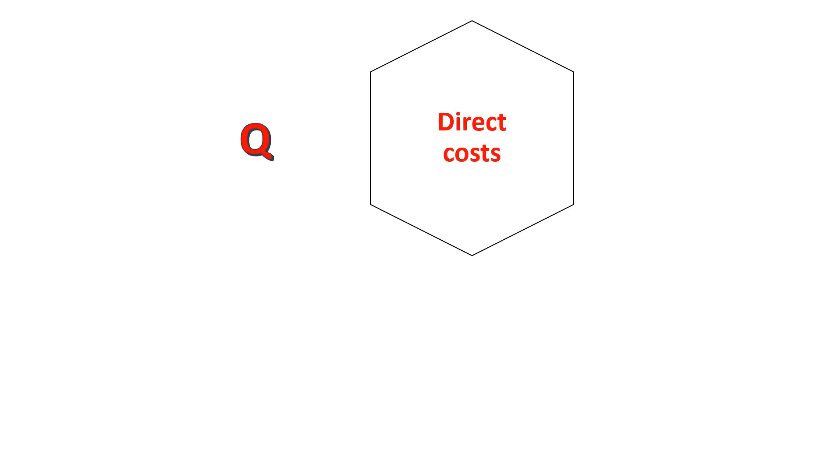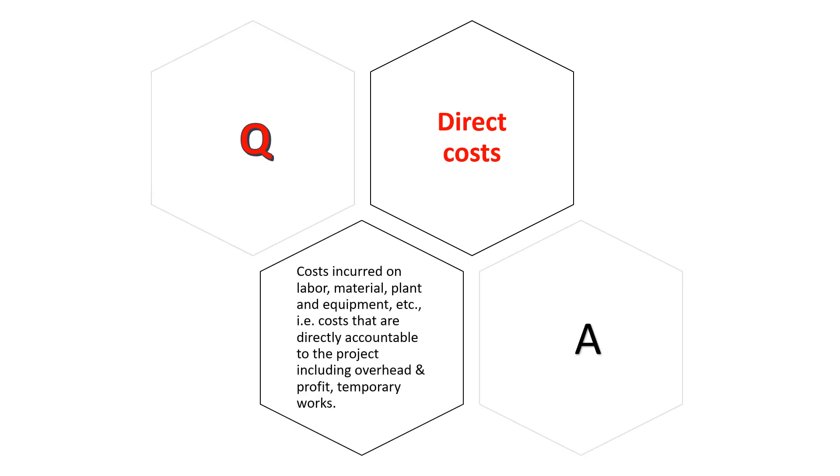Direct costs: costs incurred on labor, material, plant, and equipment, etc. Costs that are directly accountable to the project including overhead and profit, temporary works.